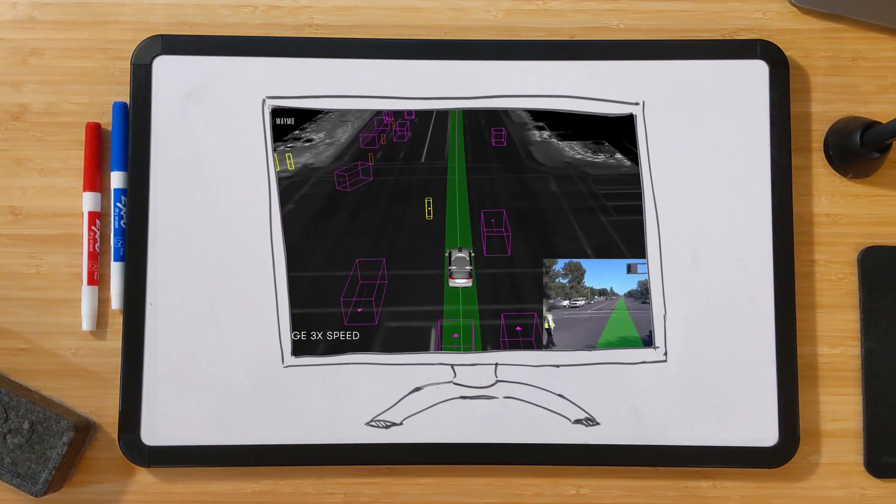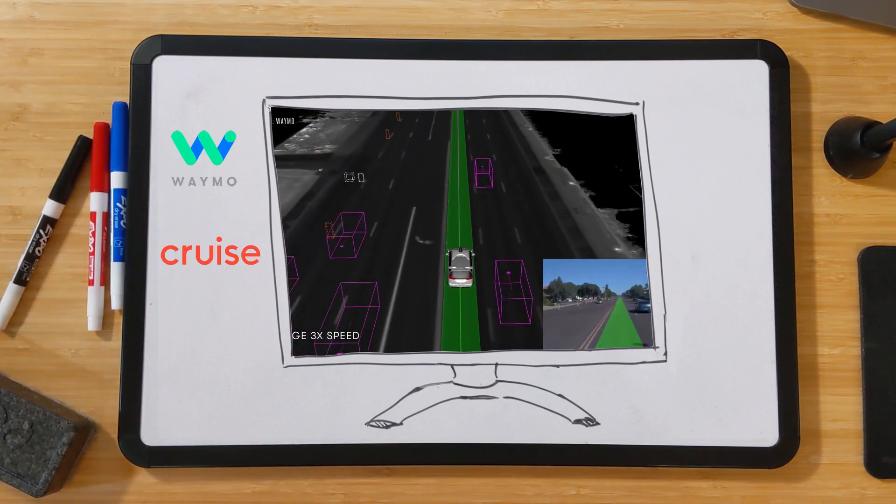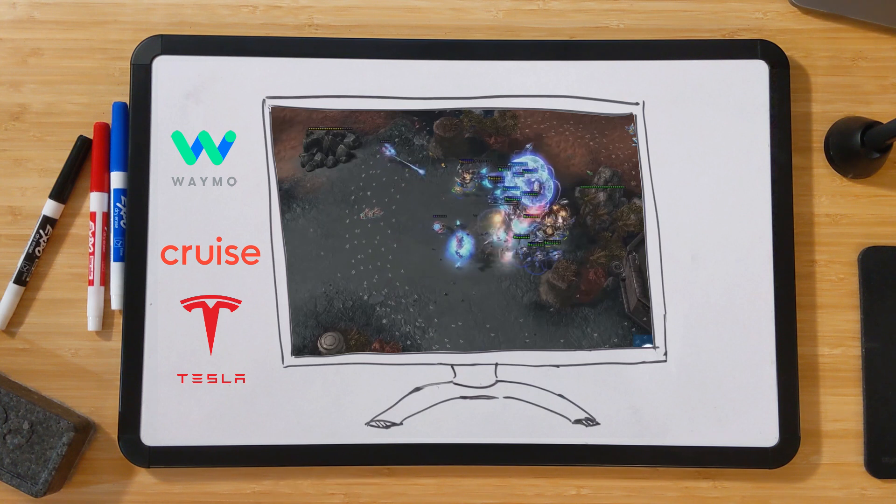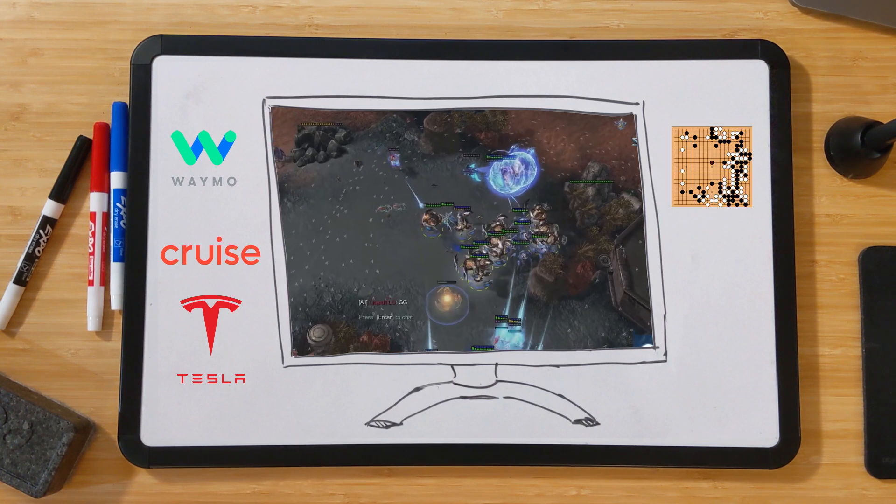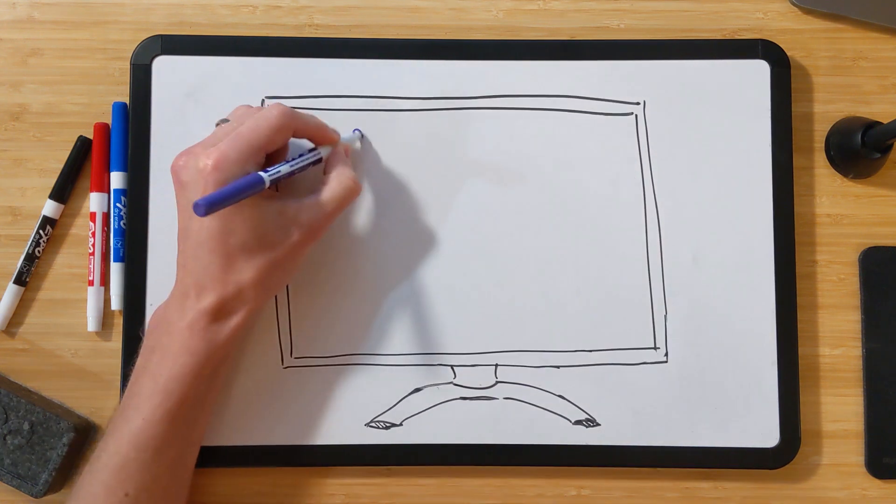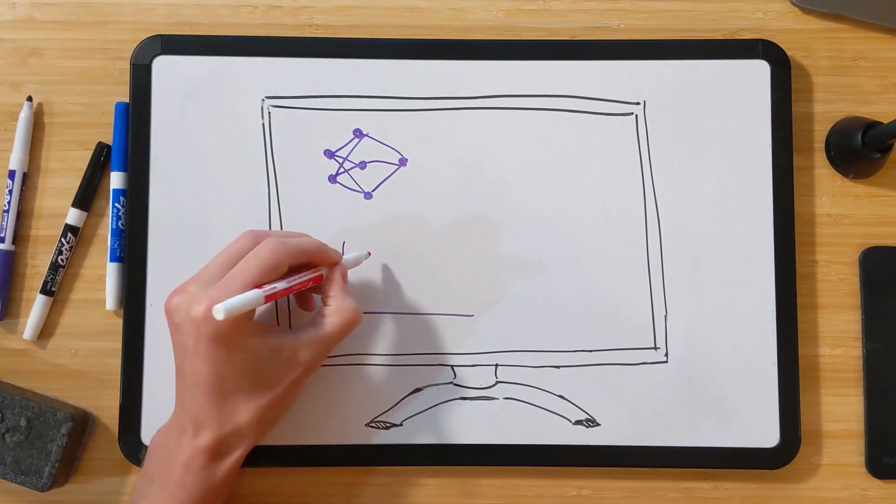From powering self-driving cars at companies like Waymo, Cruise, and Tesla, to beating up on professionals in some of the world's most challenging games, ranging from Go to StarCraft II, machine learning is making its way into software applications across every industry.